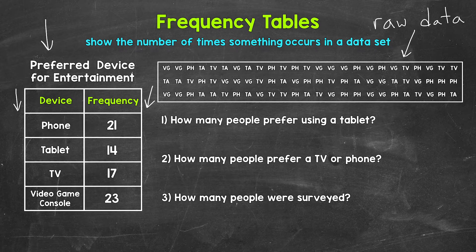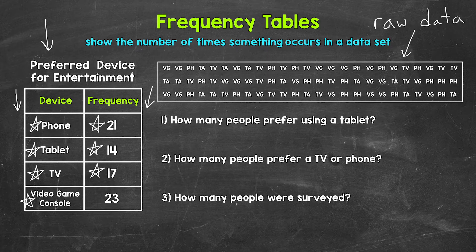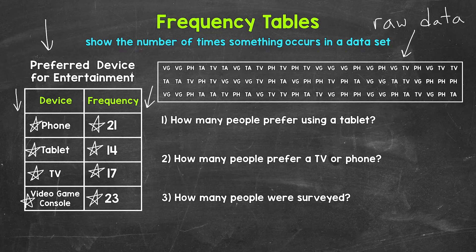Now, as far as reading this table, we can see that for a phone, we have 21 people that prefer that device. For a tablet, we have 14 people. For a TV, we have 17 people. And then lastly, for a video game console, we have 23 people. You can see that this frequency table really helps organize and present the data in a more meaningful way.